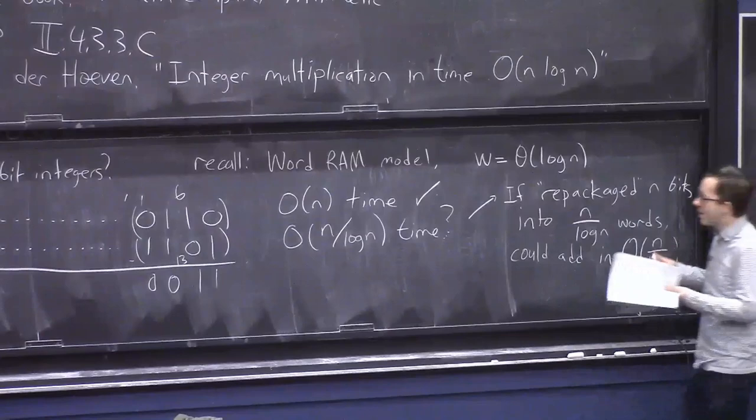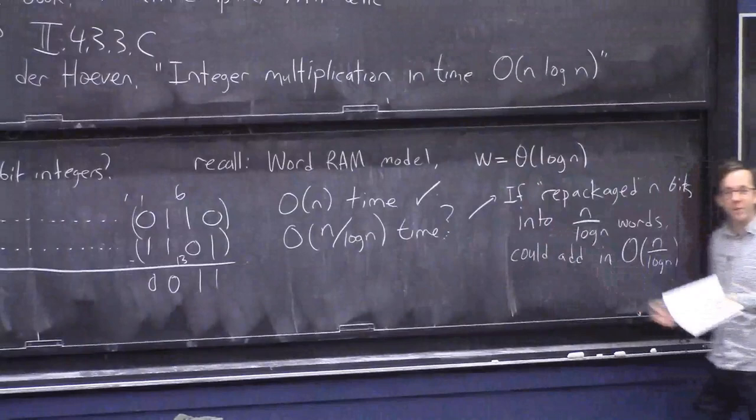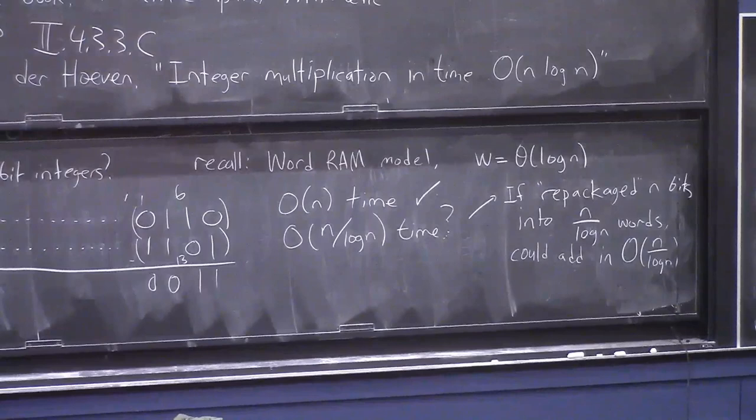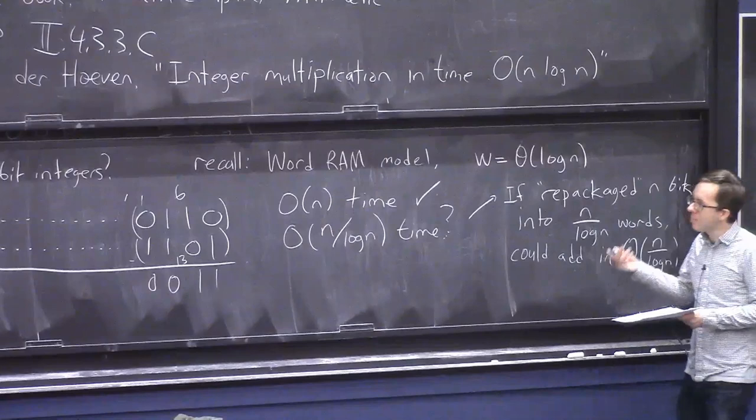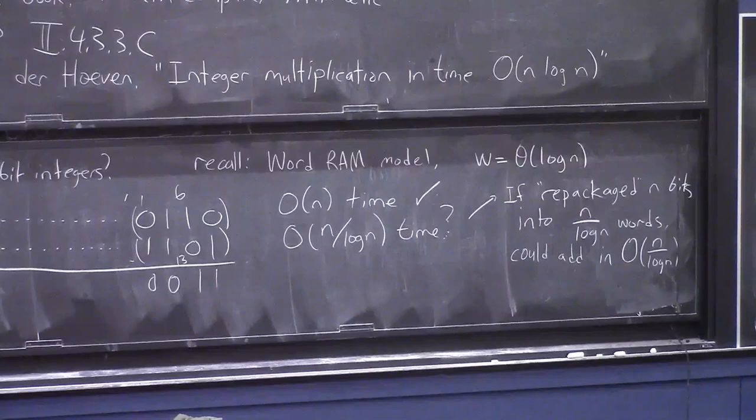OK, so this is where like, this kind of thing is sometimes called like bit tricks. And sometimes in the word RAM model, you can save factors of like log n by doing neat tricks like this. Any question about this? OK. So I bring this up because it's going to, this same little trick is going to rise in the problem of multiplication, which is like the more interesting task.